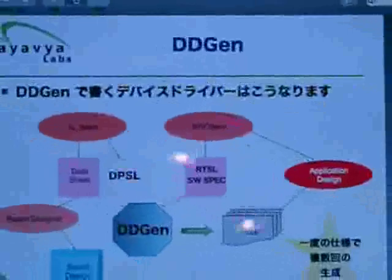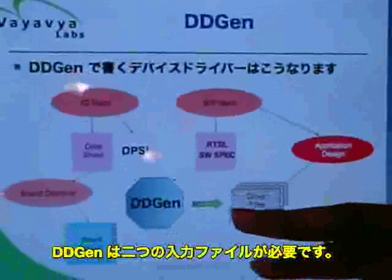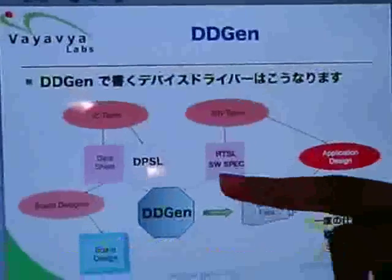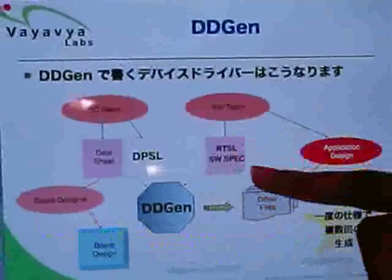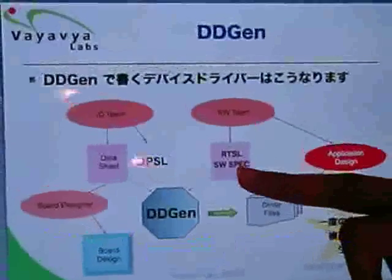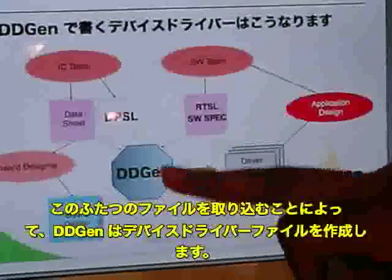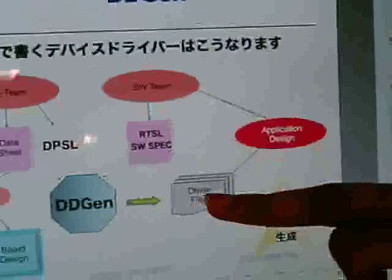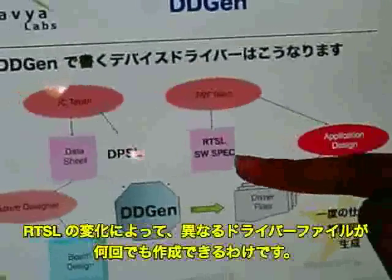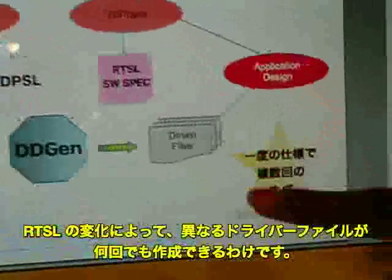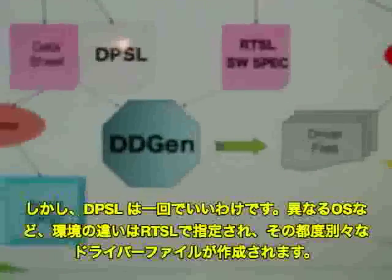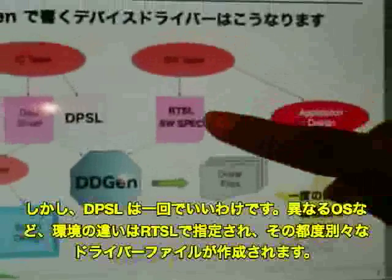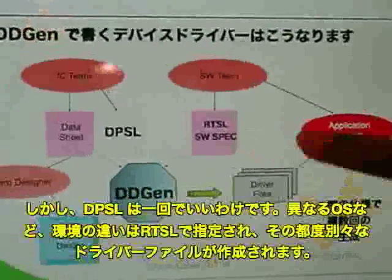Device Driver Generator DDGen takes two input files, DPSL and RTSL. Using these two files as input to DDGen, we will generate our device drivers. Based on the RTSL, we will generate drivers many times. Only DPSL will be written one time, and for different OS, we will be writing different RTSL files.